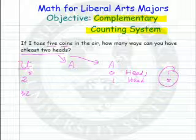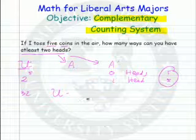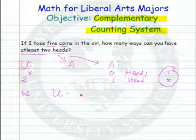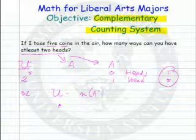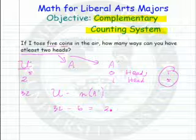So we'll take the universal set, and from that we will subtract the complement, the number of ways that it won't happen. So 32 minus six equals 26.